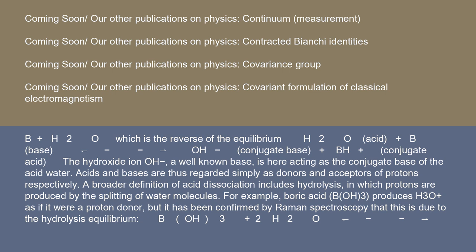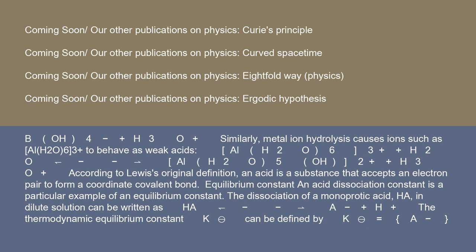B(OH)₃ produces H₃O⁺ as if it were a proton donor, but it has been confirmed by Raman spectroscopy that this is due to the hydrolysis equilibrium: B(OH)₃ + H₂O ⇌ B(OH)₄⁻ + H₃O⁺.